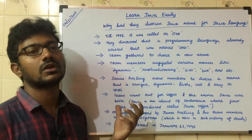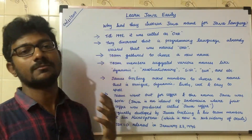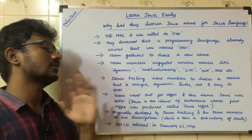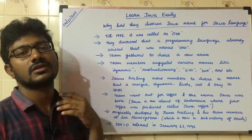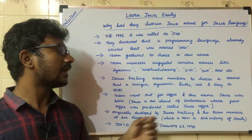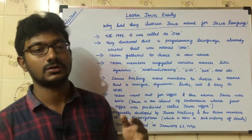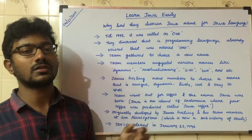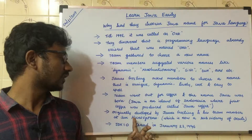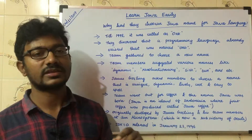They thought why not name the programming language Java, as it is the first programming language that supports many various things. So they named it Java. James Gosling and his team members, the founders of Java, were working at Sun Microsystems, which is now a subsidiary of Oracle.